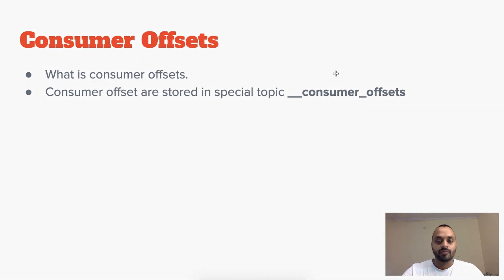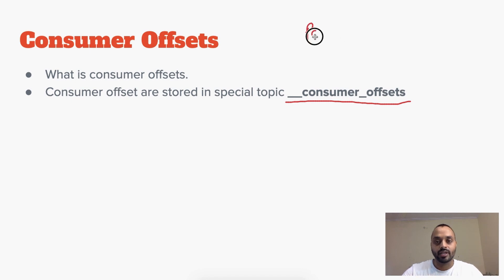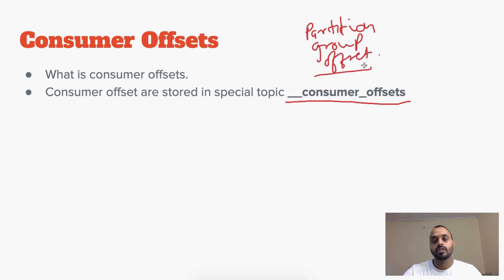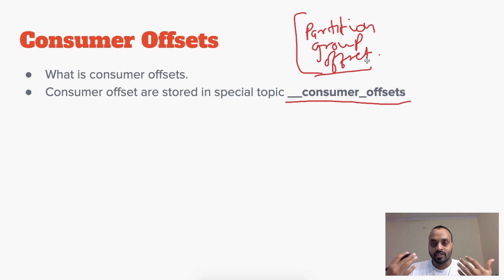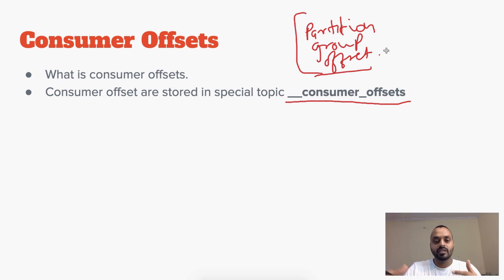These offsets are stored in a special topic named __consumer_offsets. Here it will store information about partition, group, and offset. Whenever a new consumer joins some partition with some group, it will know its offset from here, and when reading from the topic it can update this offset. We will discuss these update strategies in later points.